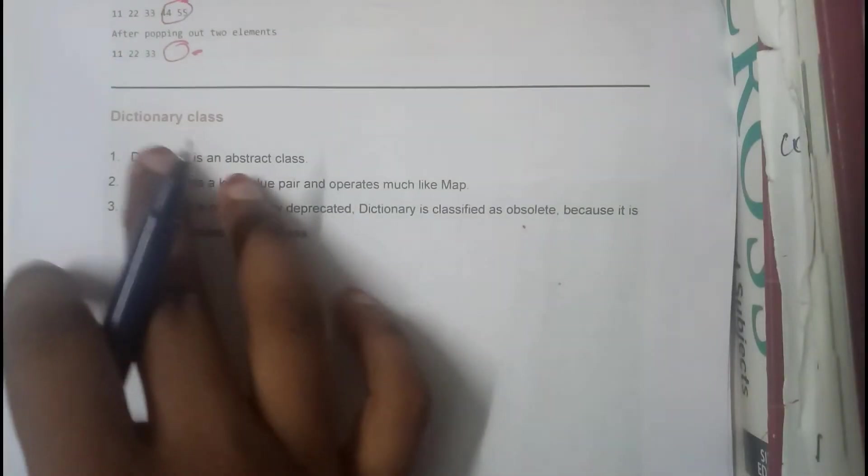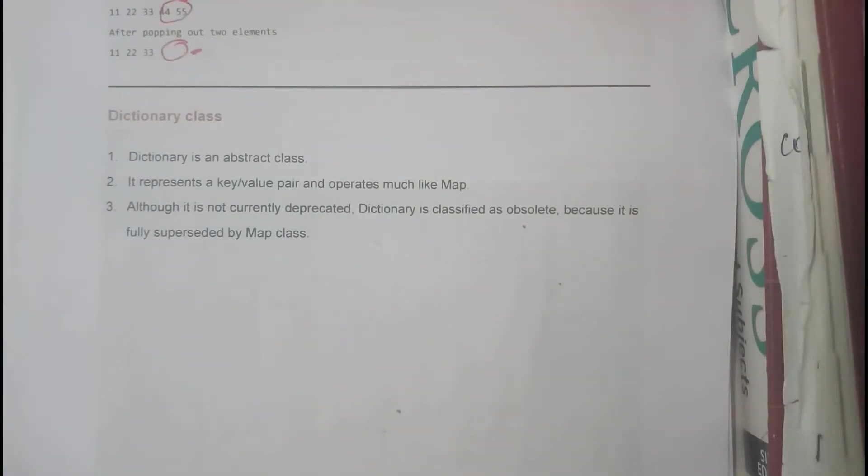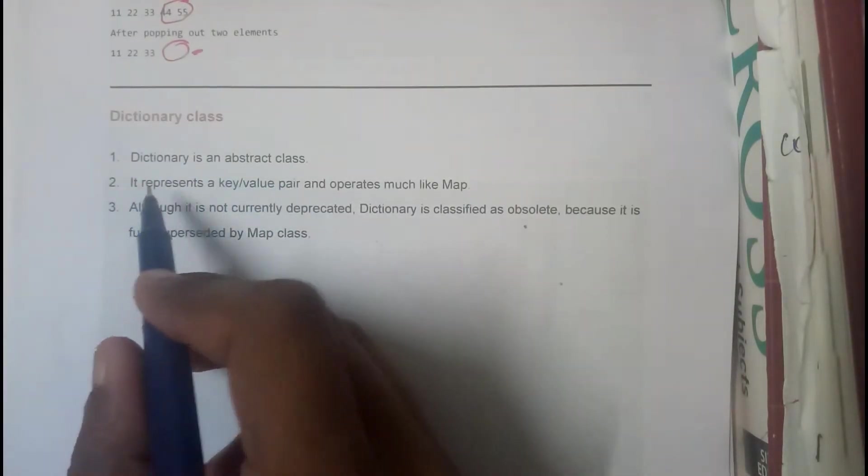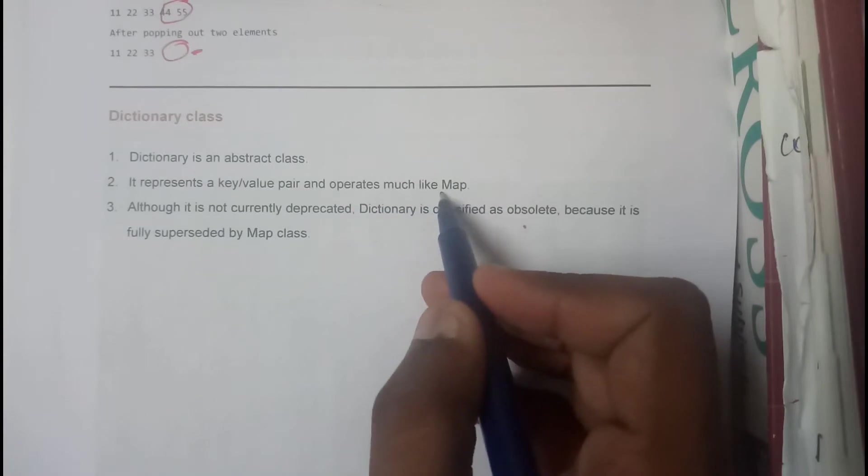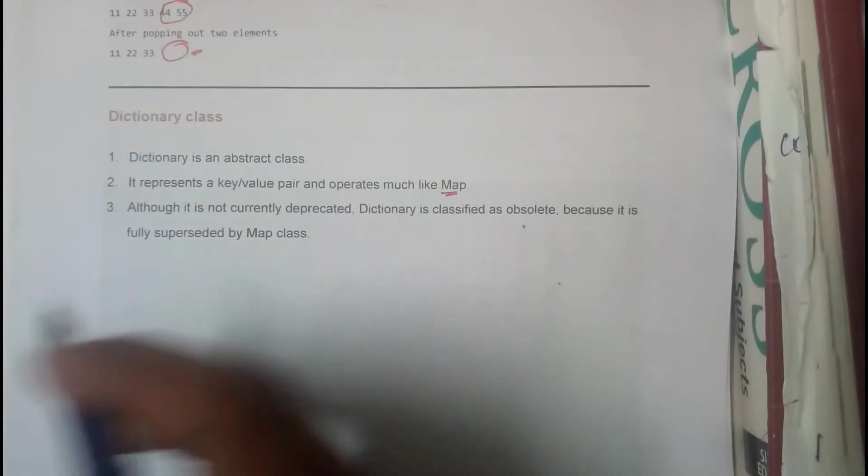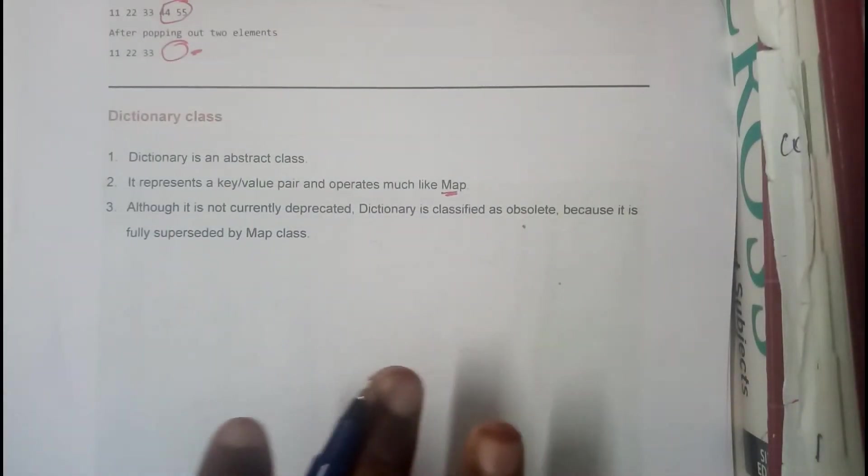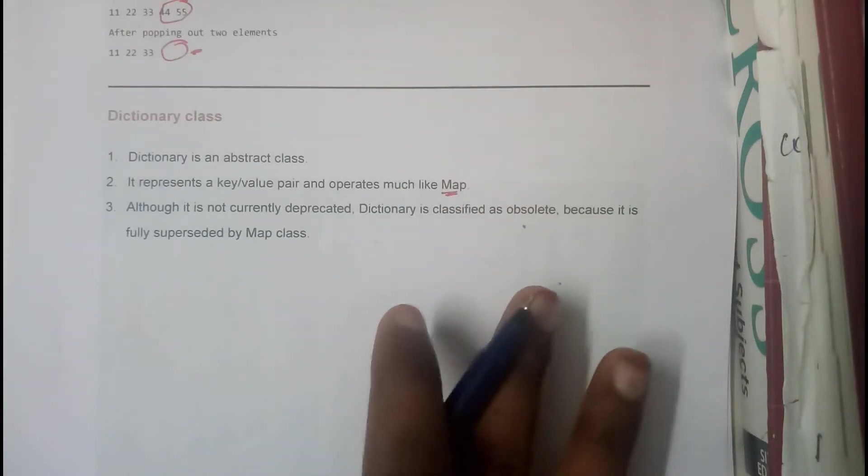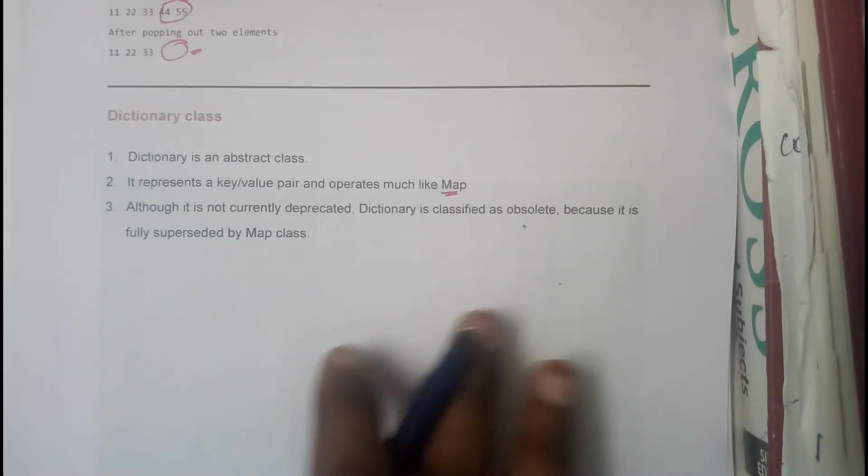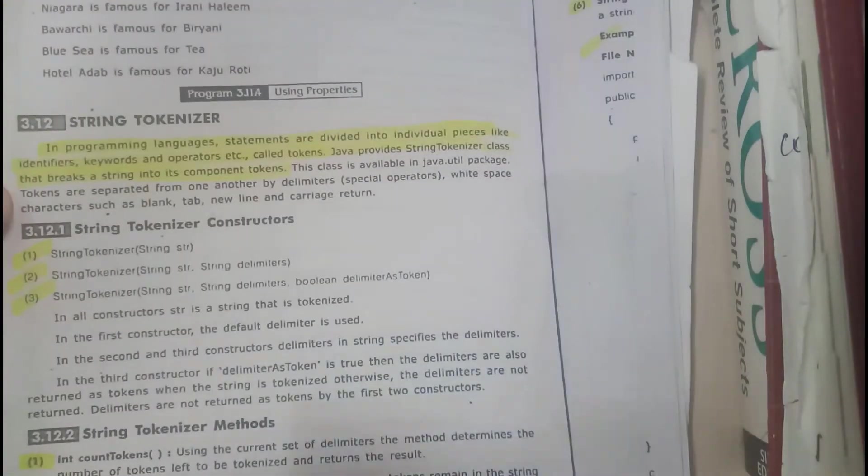Let us go to the last topic of this tutorial: dictionary class. Dictionary is an abstract class. It represents a key value and operates just like a map in which you will not have any ascending order or anything. It is just going to store them. I hope everyone got a small idea on all the things that we have discussed till now.